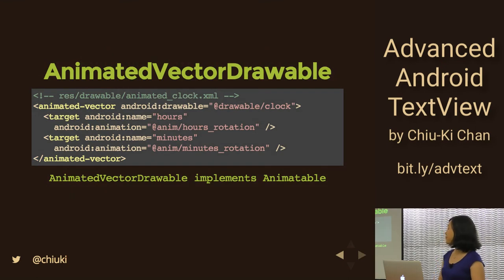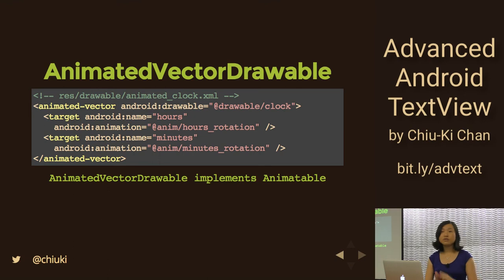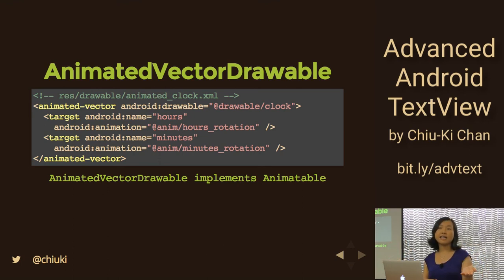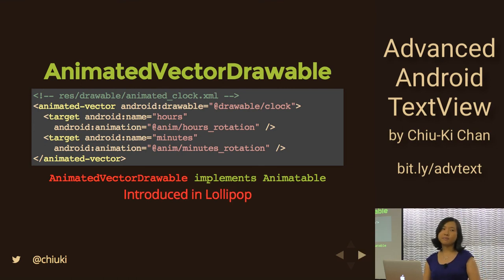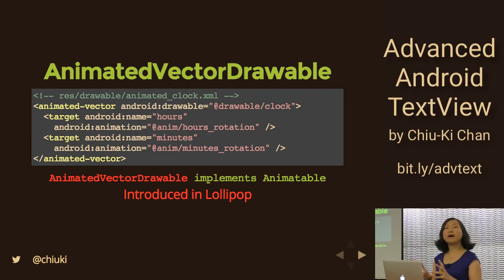Finally, the animated clock is a little more interesting — it's an animated vector that allows you to tell Android what to draw. Previously you had to give it a PNG file and ask it to be rotated or swapped. However, there's a caveat: the AnimatedVectorDrawable class, which implements Animatable, is introduced in Lollipop, so you cannot use it in older versions. There are noises about it being in the support library but it's not available yet.